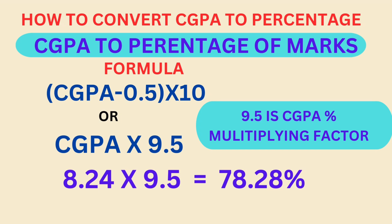Now, how to convert CGPA to percentage of marks. For that also we have a formula. The formula is CGPA minus 0.5 into 10, or the simple formula CGPA into 9.5, where 9.5 is the CGPA percentage multiplying factor.